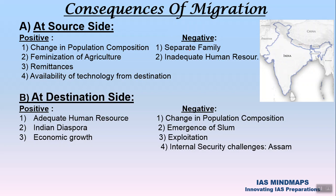Negative consequences at the source side include separated families — for example, a husband living in Pune and wife in Bangalore due to occupation, though they are not divorced. This impacts family life. Another negative is inadequate human resources at the source level — if people keep moving from Bihar and UP to Delhi and Maharashtra, there is a shortage of human resources left behind in the source areas.